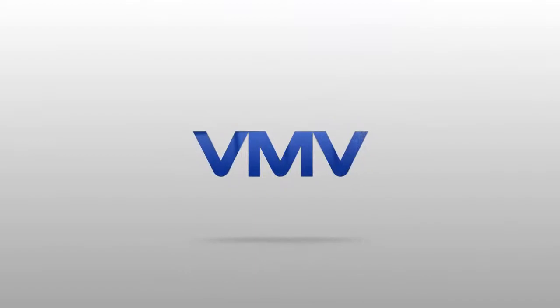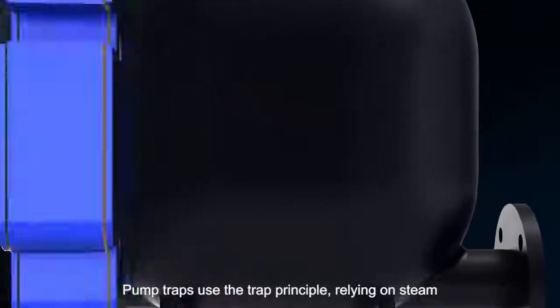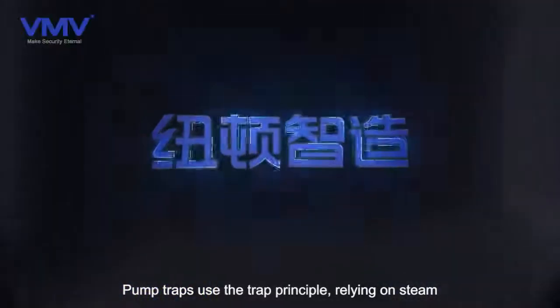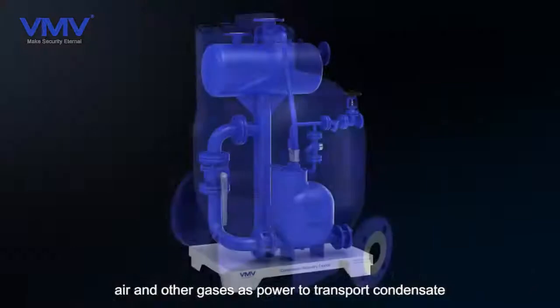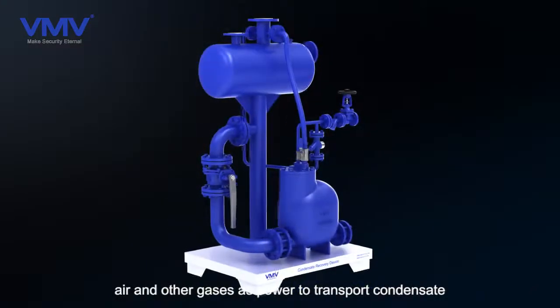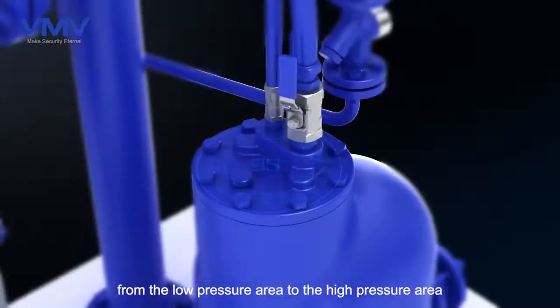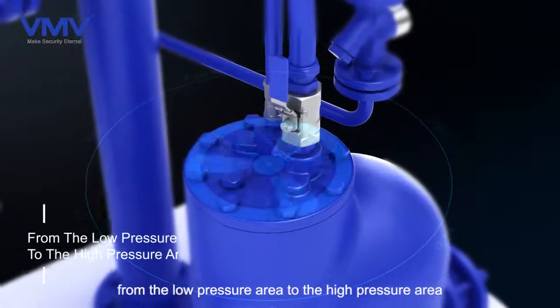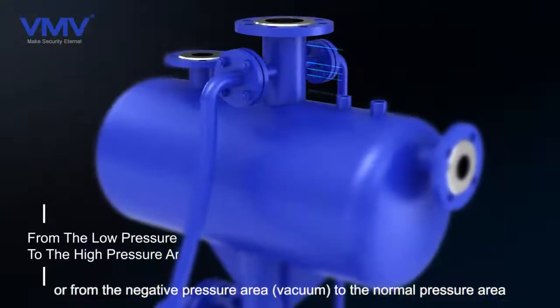Pump trap connection methods include flange, thread, and welding. Pump traps use the trap principle, relying on steam, air, and other gases as power to transport condensate from the low pressure area to the high pressure area, from the negative pressure area to normal pressure area.